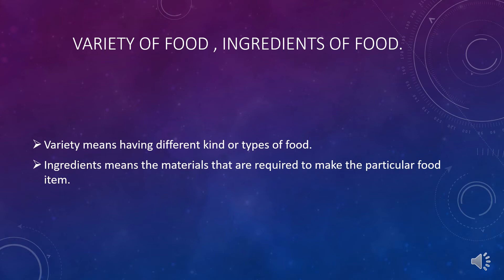The next topic is ingredients of food. Ingredients are the materials required to make a particular food item. For example, to cook boiled rice you need rice grains and water — those are the ingredients. Similarly, to cook dal you need pulses, water, salt, and spices — these are the things required to cook dal.